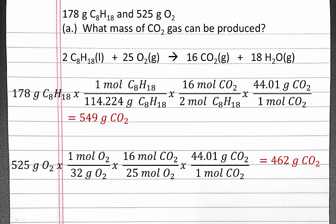Whichever reactant produces less carbon dioxide is our limiting reagent — it's the one that's going to run out first. So we run out of oxygen gas first before we run out of C8H18. Therefore, the total amount of carbon dioxide that can be produced is 462 grams.